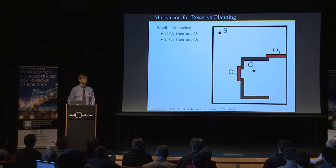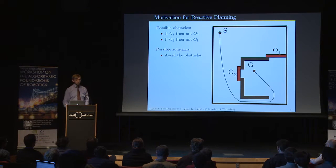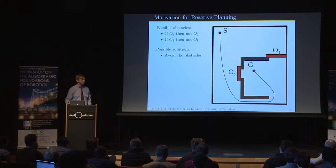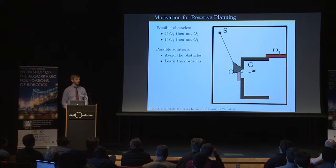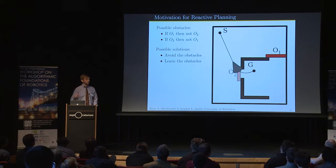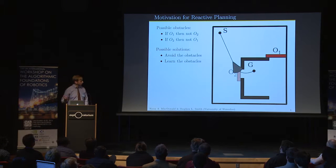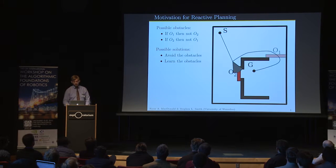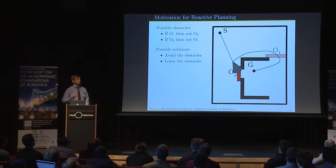What are some possible solutions? What about avoiding the obstacles? That might be possible, but we're also interested in cases when that's not possible. How about we learn the obstacles? You can see here the robot drives up to obstacle two, senses it, figures out it doesn't exist, and continues on to the goal. But we're not interested in a lot of computation post-learning. We'd like whatever controls the robot to also handle the case when it measures O2 to be obstructed.